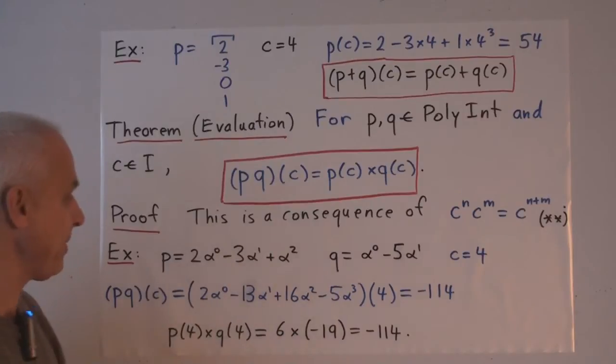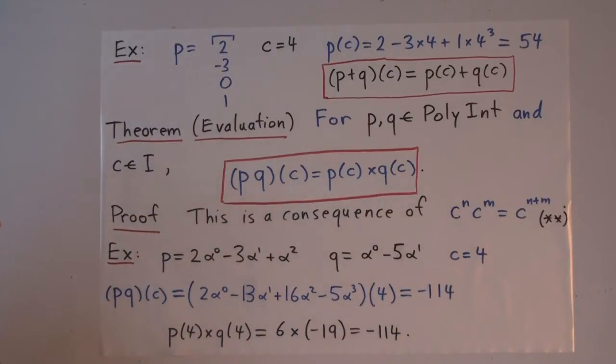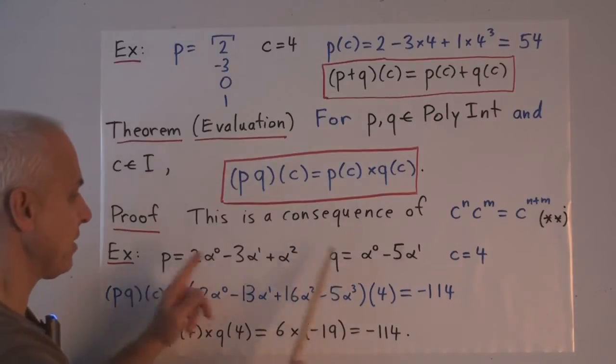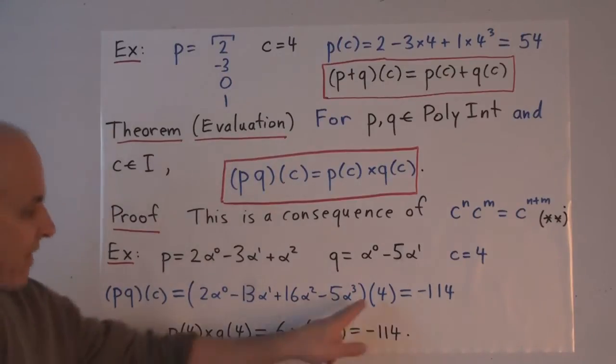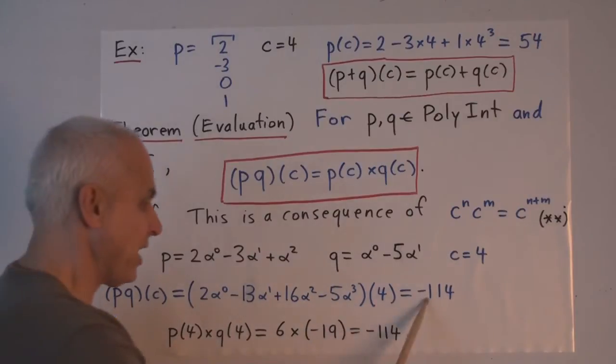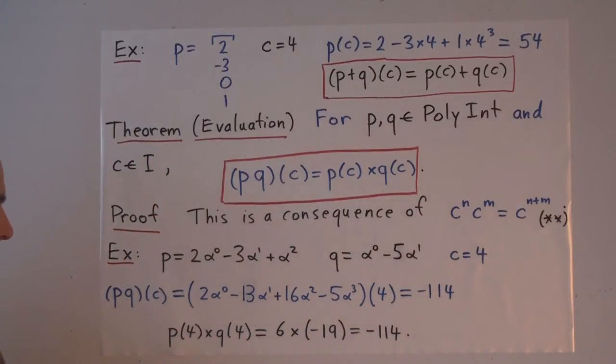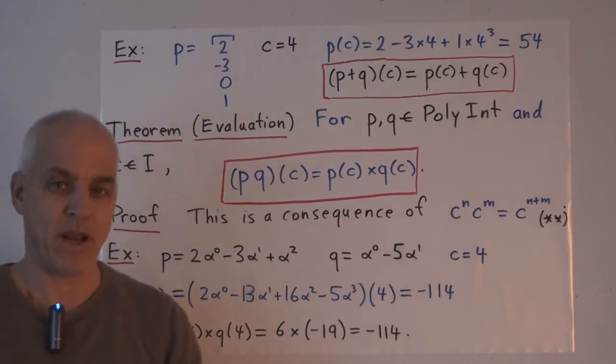So for example, here is one poly number P, two alpha to the zero minus three alpha one plus alpha squared. And Q is alpha to the zero minus five alpha to the one. And C is four. Then PQ of C is what? Well, there's the product of this integral poly number with this integral poly number in standard alpha form. Evaluating at four. So replacing all the alphas with fours and evaluating gives a minus 114. On the other hand, if we just evaluate P by itself at four and multiply by Q by itself at four, then we also get minus 114.